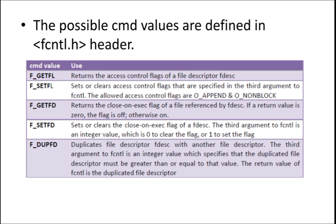F_GETFD returns the close-on-execute flag of a particular file referenced by the file descriptor. If F_GETFD returns 0, the close-on-execute flag is off — it is not activated for that particular file. If you want, after execution is completed, if you want to close that particular file, you can activate the close-on-execute flag. If the return value is 0, the flag is off; otherwise it is on. F_SETFD is used to set or clear the previous value of the close-on-execute flag. The third argument to FCNTL is an integer value: 0 to clear the flag, or 1 to set the flag.